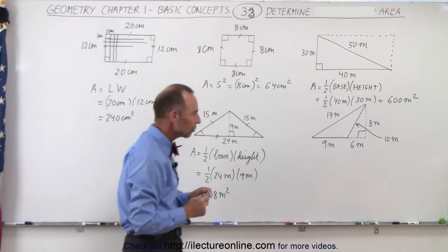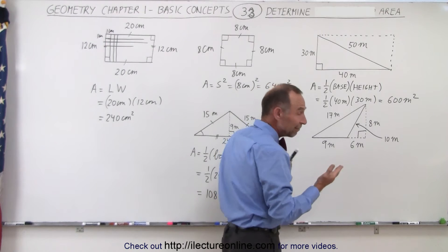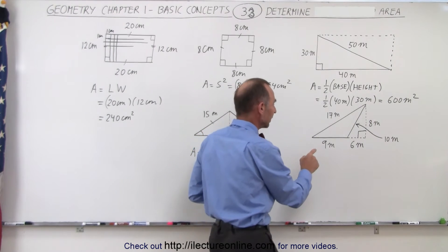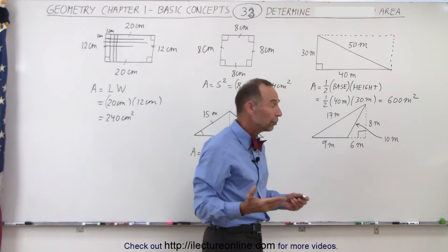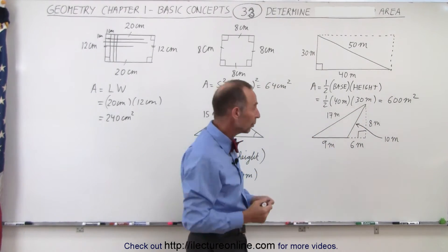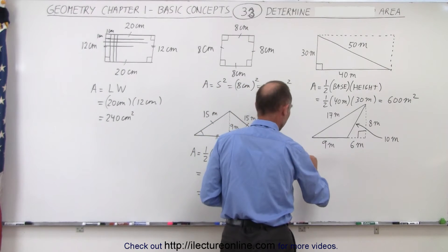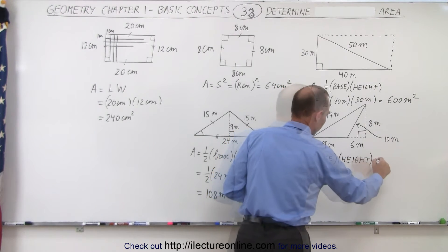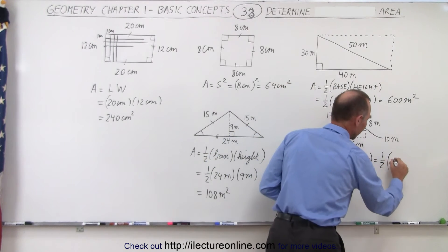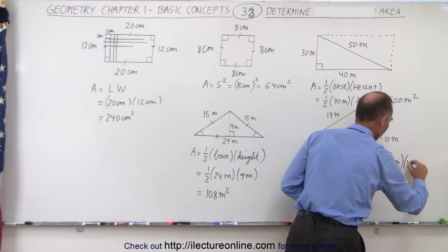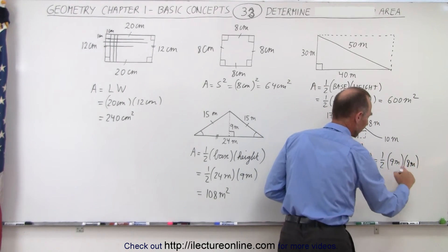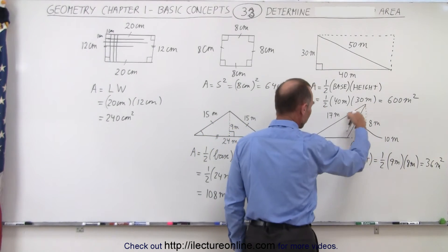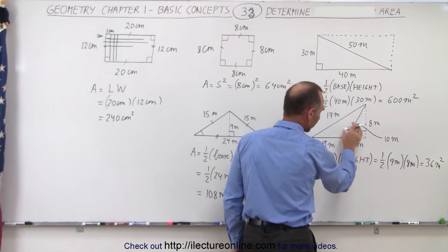And finally, that's kind of a strange-looking triangle. Notice that even though it looks very strange with a weird shape, we could still find the area of this triangle by taking one-half the base times the height. So the area is equal to one-half times the base, which is nine meters, times the height, which is eight meters. Half of eight is four. Four times nine is equal to 36 meters squared.